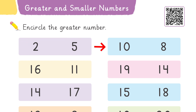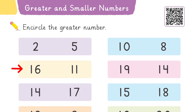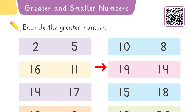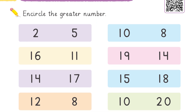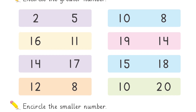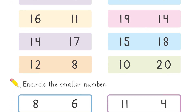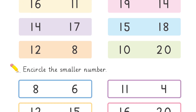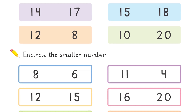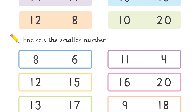Then we have ten and eight — which one is greater? Ten is greater. Then we have sixteen and eleven — sixteen is greater. And for nineteen and fourteen, nineteen is greater. My dear kids, there are eight questions and I have discussed four; the other four are done in the same way, because you are just going to encircle the greater or bigger number.